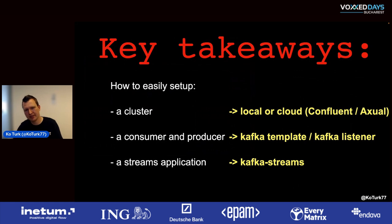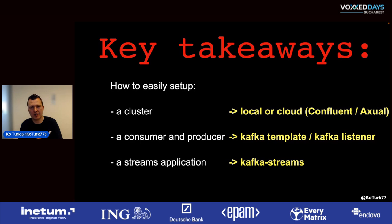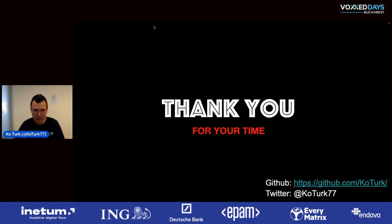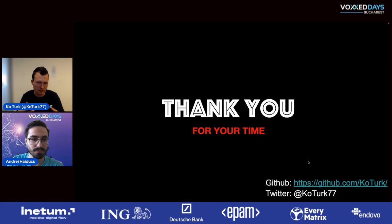My key takeaways: set up a Kafka cluster — locally or in the cloud with Confluent or Axual. Don't manage it yourself in production if you can avoid it. I showed you the consumer/producer with KafkaTemplate and @KafkaListener, and the Kafka Streams application with the DSL. Please check my GitHub — I'll commit the code shortly. Follow me on Twitter and give feedback. Thank you very much!